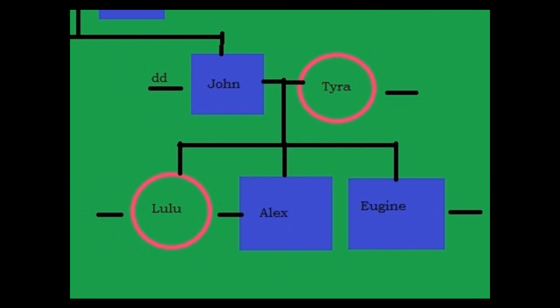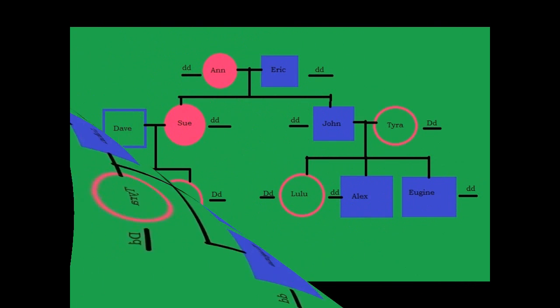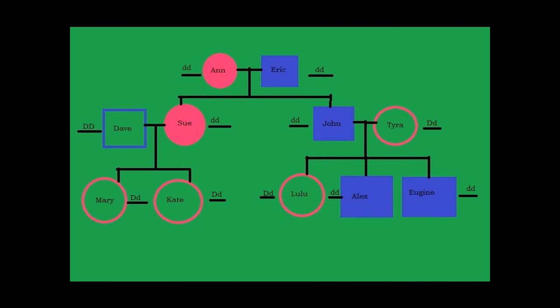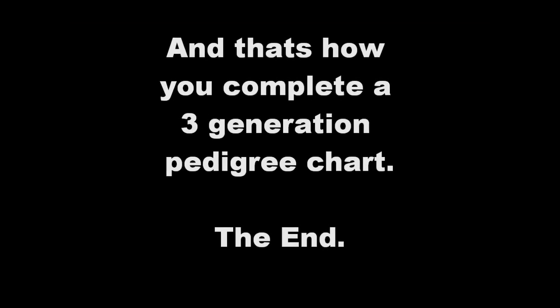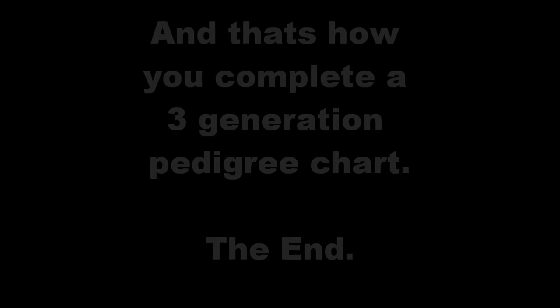Now for John, being little d little d, but having two out of three children with the trait, it means that Tyra has to be heterozygous, capital D little d. This makes the children either capital D little d, or little d little d. Here is the completed chart, and that is how you complete a three-generation pedigree chart. The end. Thank you.